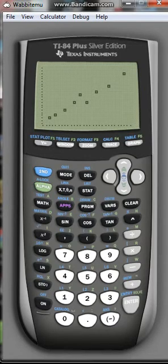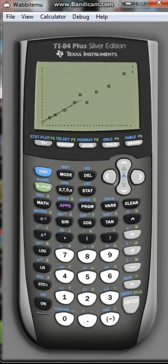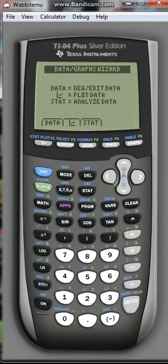You can have all these regressions. We'll just choose linear regression and it'll put a line of best fit through there.